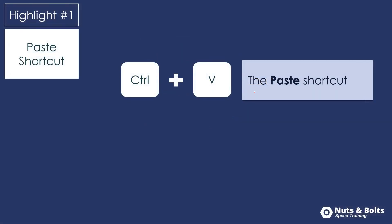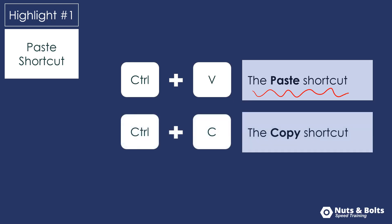First off, Control V is the keyboard shortcut for paste, which works well with Control C to copy. So after we Control C to copy something in our documents, we use Control V to paste it somewhere else. You'll see a lot of examples within this video.